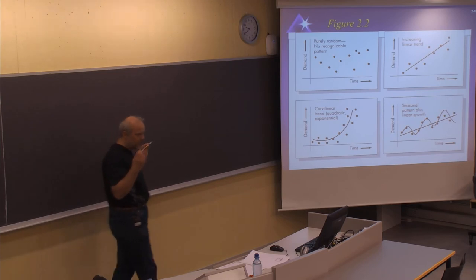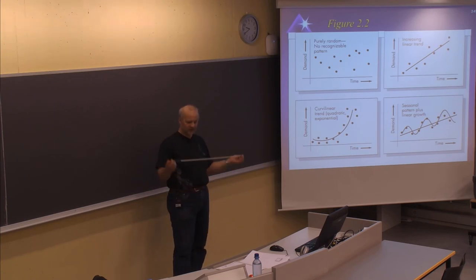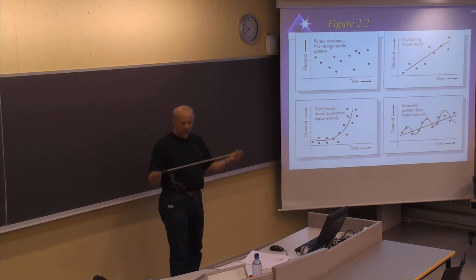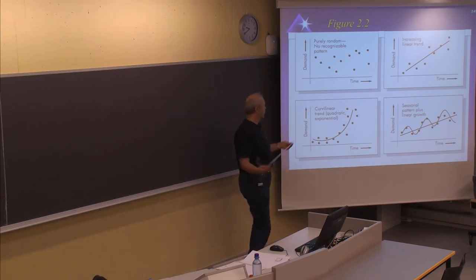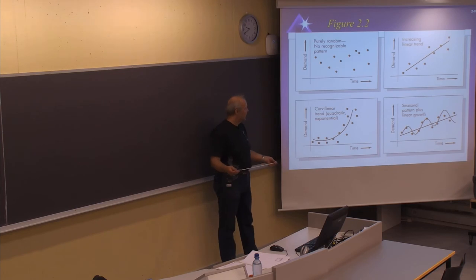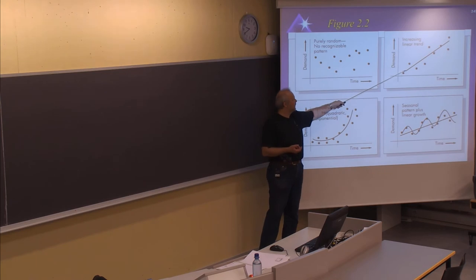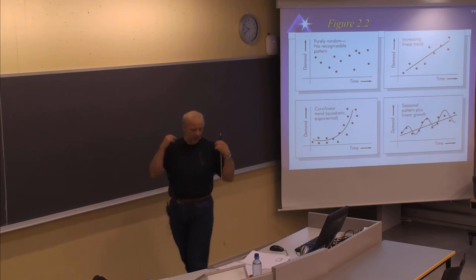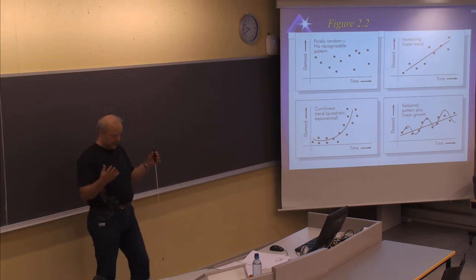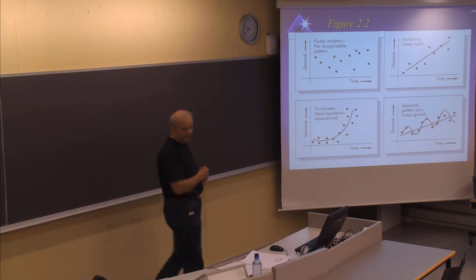By using the N-period moving average, it is possible to combine a seasonal method with a trend method. What we will now present — which is also the method to use in problem 1 of assignment 2 — is Winters method, which is based on exponential smoothing and is also called triple exponential smoothing. It is related to Holt's method for trends, but now we include one more component: the season. So we have both trends and seasons included in the same method.